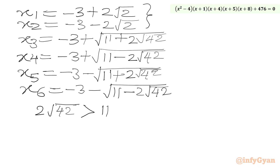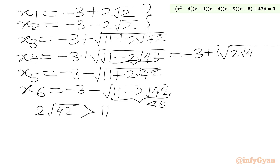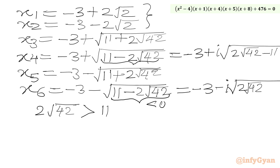We can see that √42 is greater than 3, so 2√42 > 6, which means 11 - 2√42 is a negative quantity. Therefore x₅ and x₆ involve √(-1) = i, giving complex solutions: x₅ = -3 + i√(2√42 - 11) and x₆ = -3 - i√(2√42 - 11). So in total we have 4 real and 2 complex solutions.